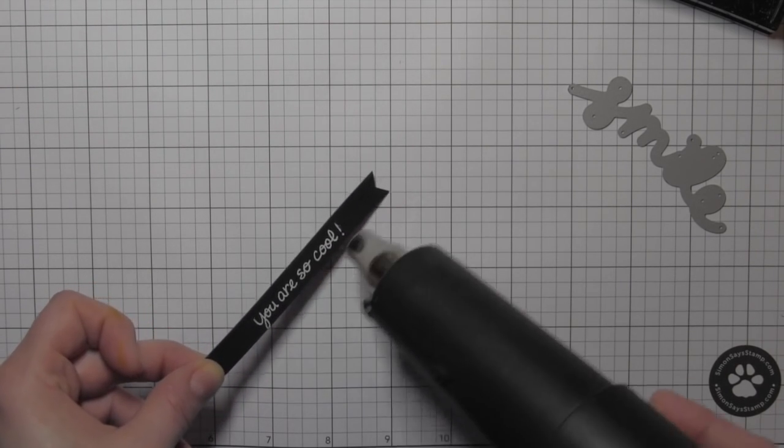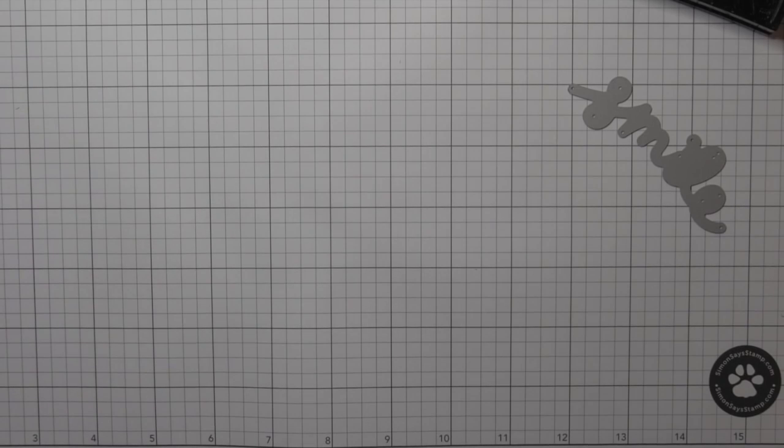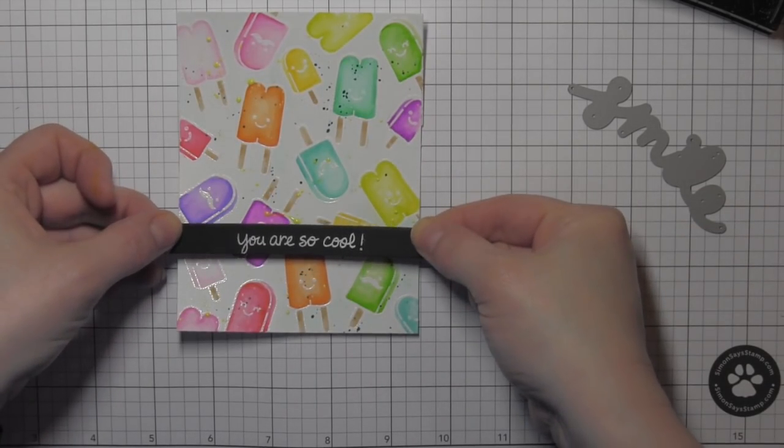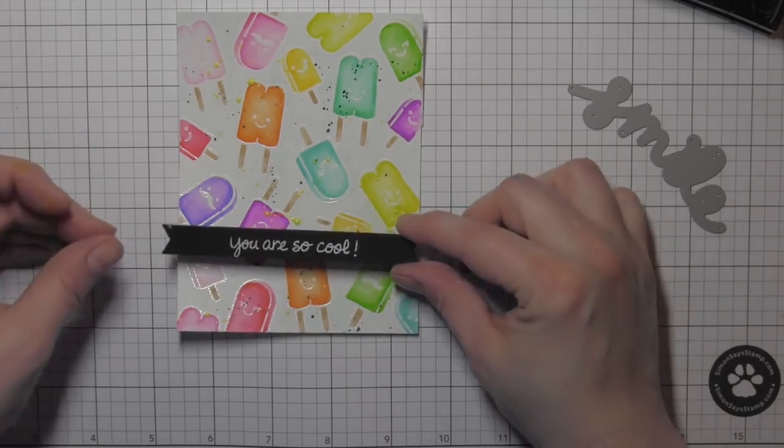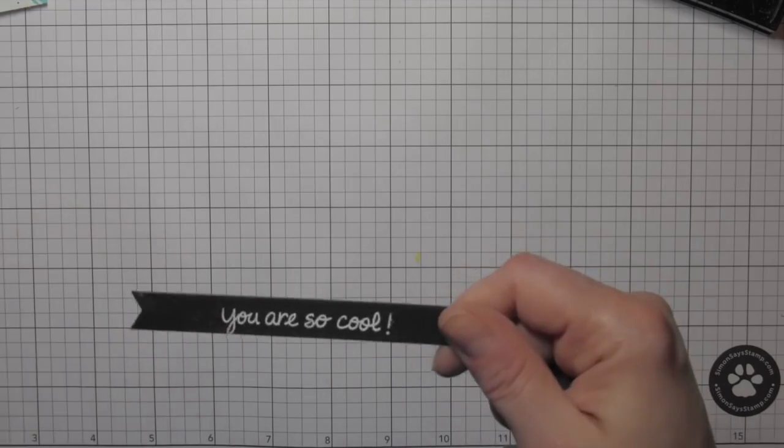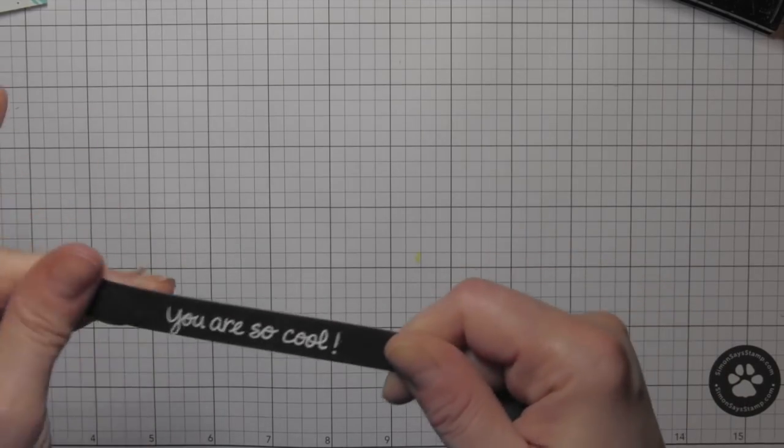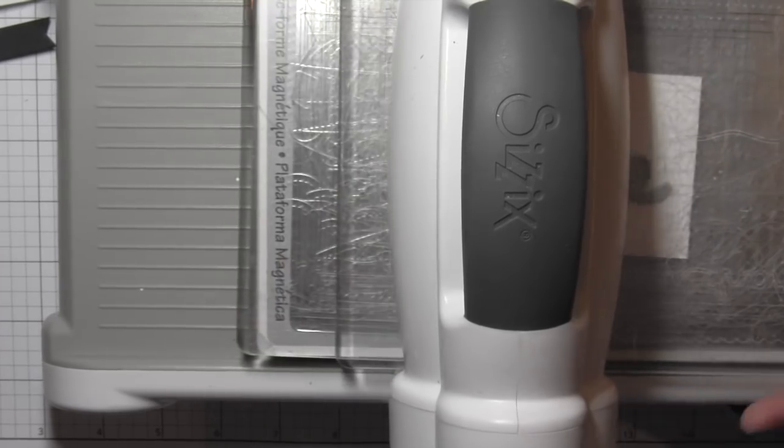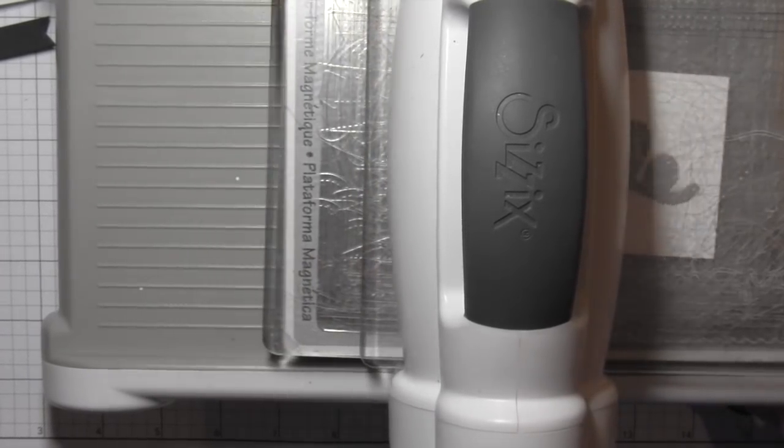Once that is completely heat set, I am going to die cut the word smile. This is a brand new die just released, and I will die cut that from some of the Bristol smooth cardstock because I'm going to watercolor it as well. And I'm going to die cut it from the cardstock.